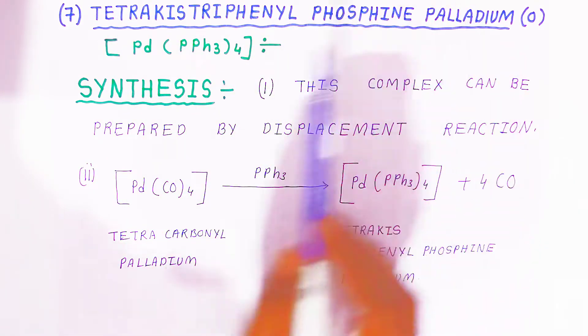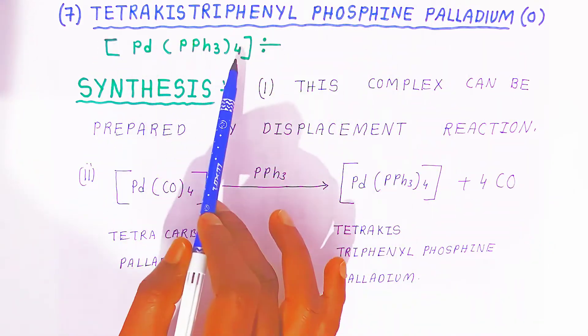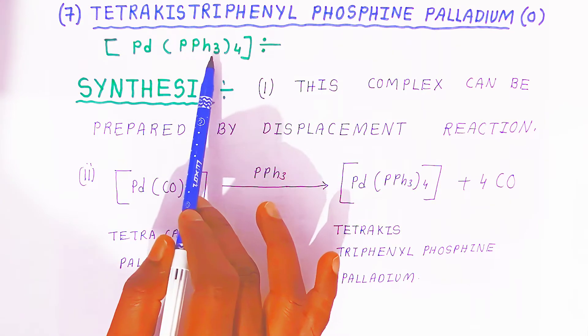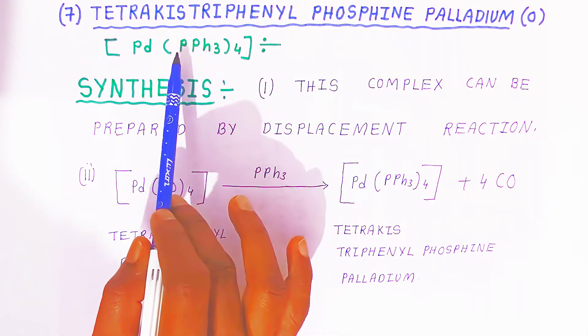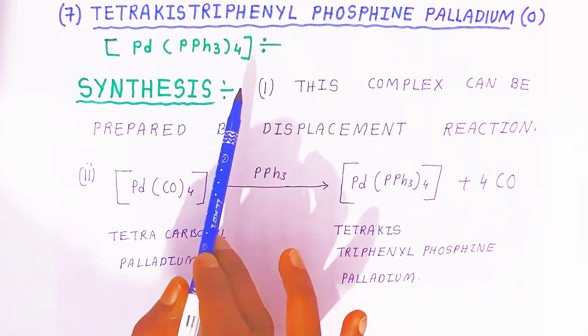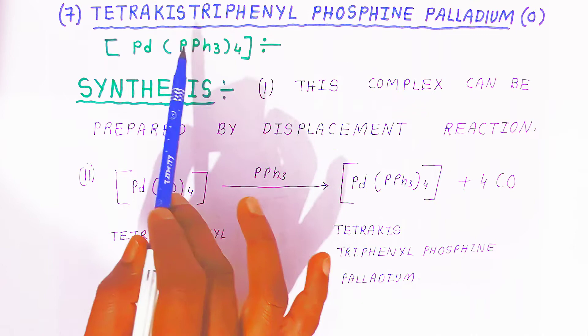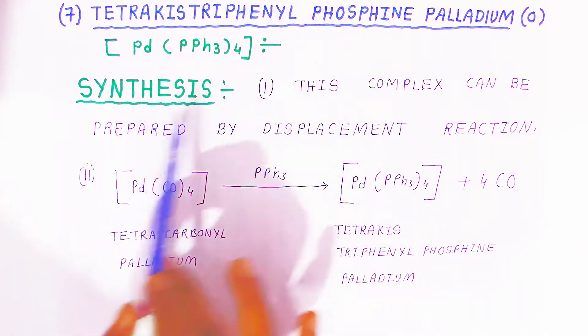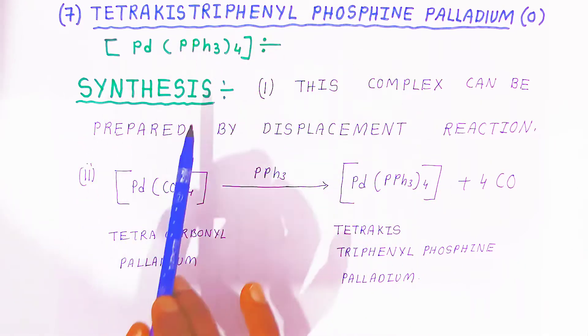This is the complex structure students: tetrakis triphenylphosphine palladium. This is how you have to read the complex. Now let's understand how you are going to prepare this complex. For synthesis, we are going to see this complex can be prepared by displacement reaction.